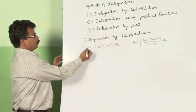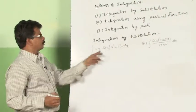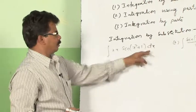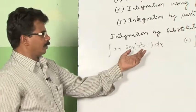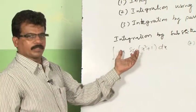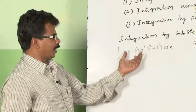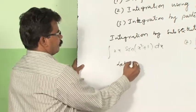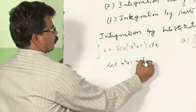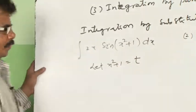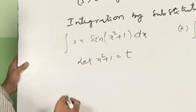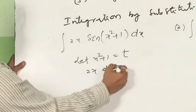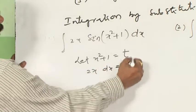Our first one is: integral of 2x · sin(x² + 1) dx. What is the suitable function here that we have to take to make this function very simple to find the integration? Let us assume x² + 1 is equal to some t. Then what is the derivative of x² + 1? 2x dx is equal to dt.